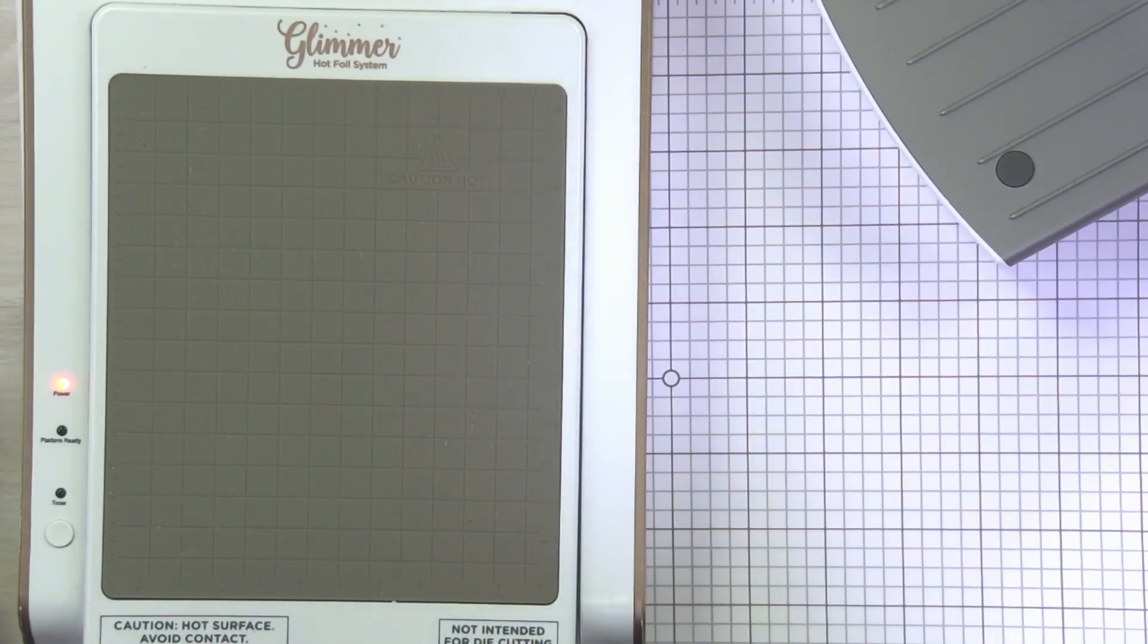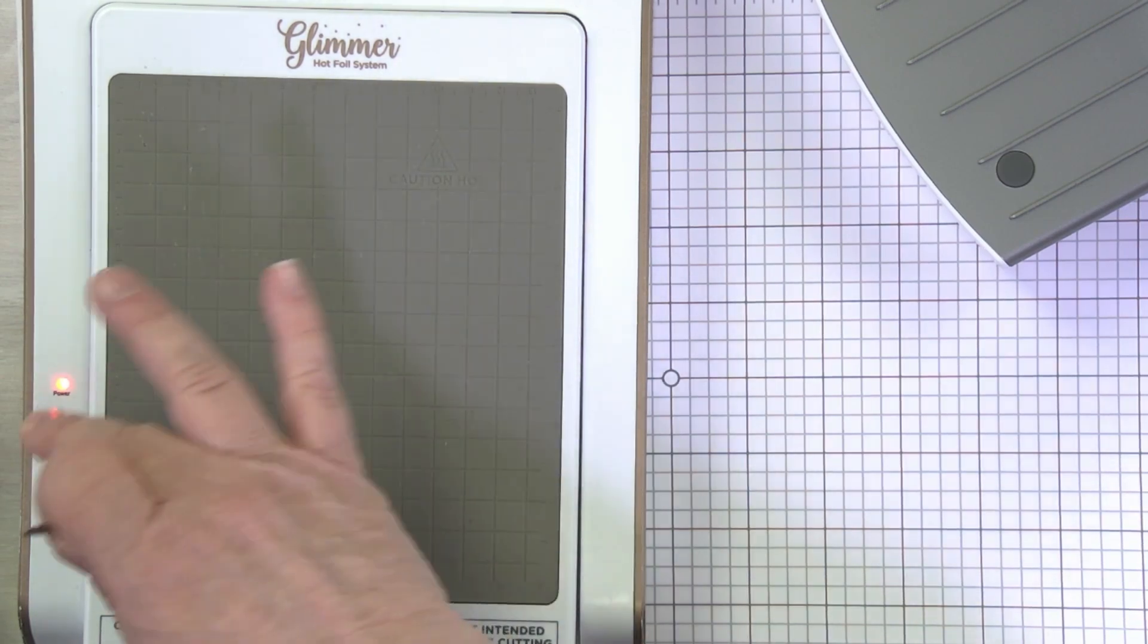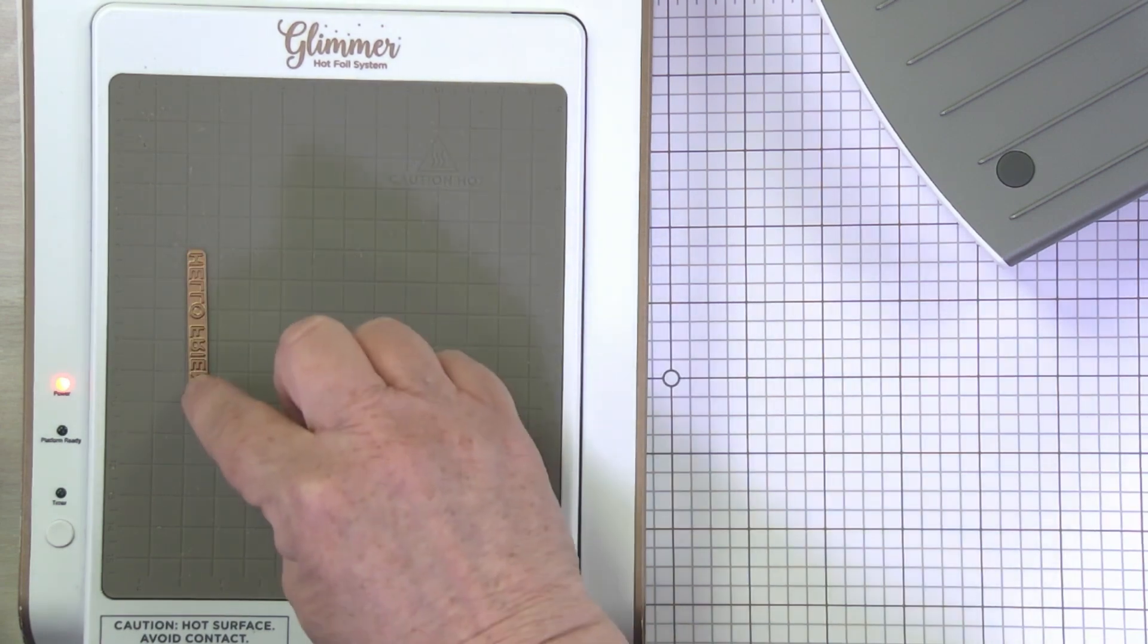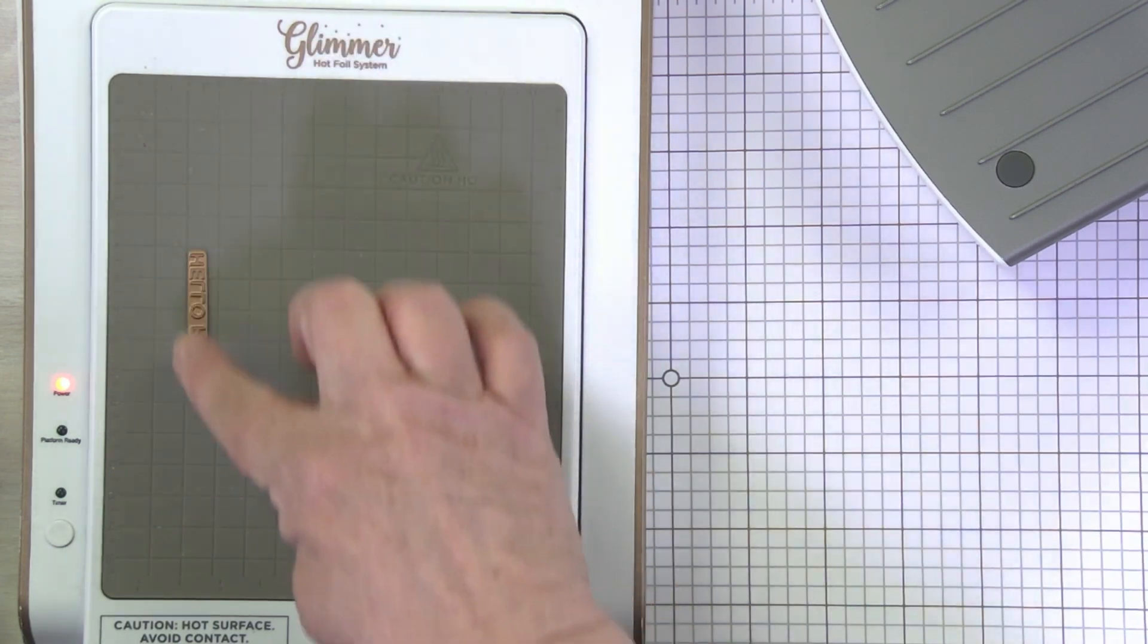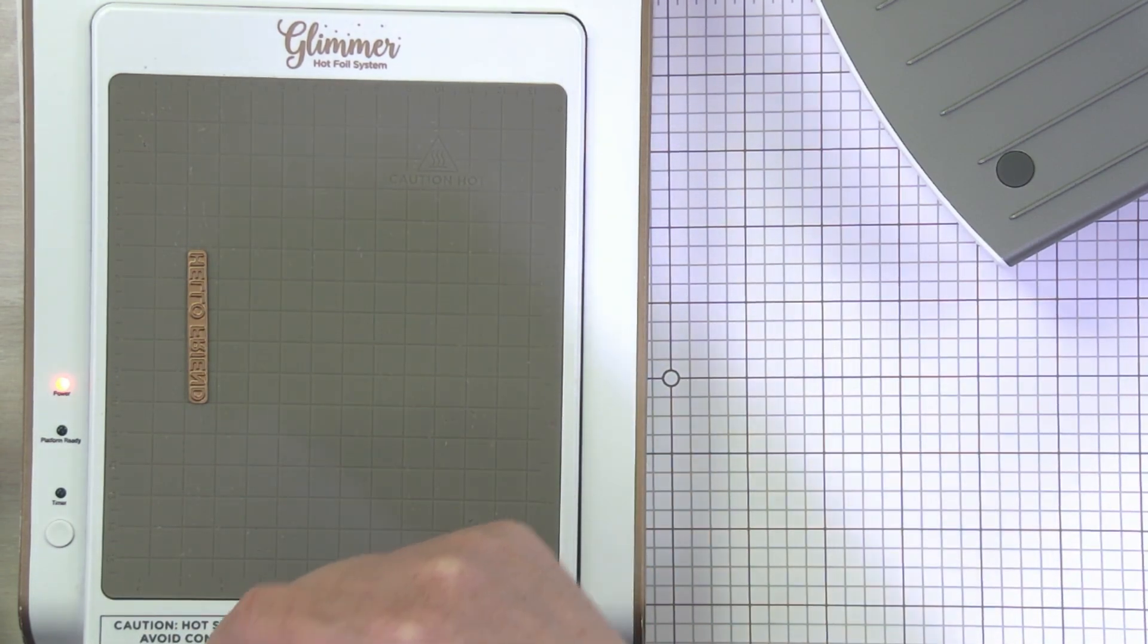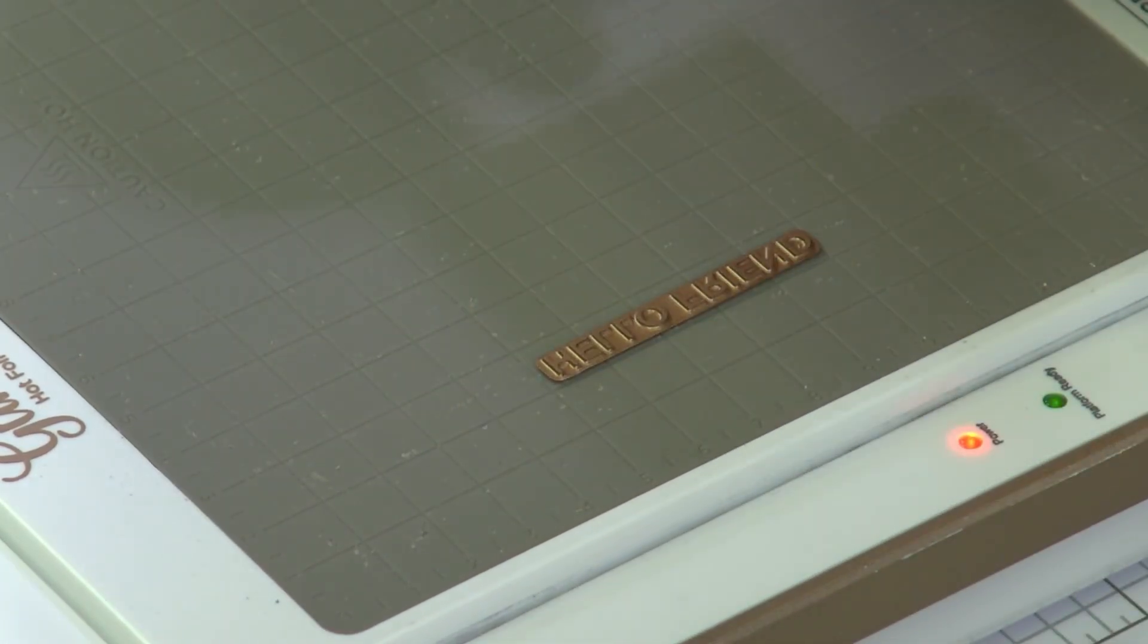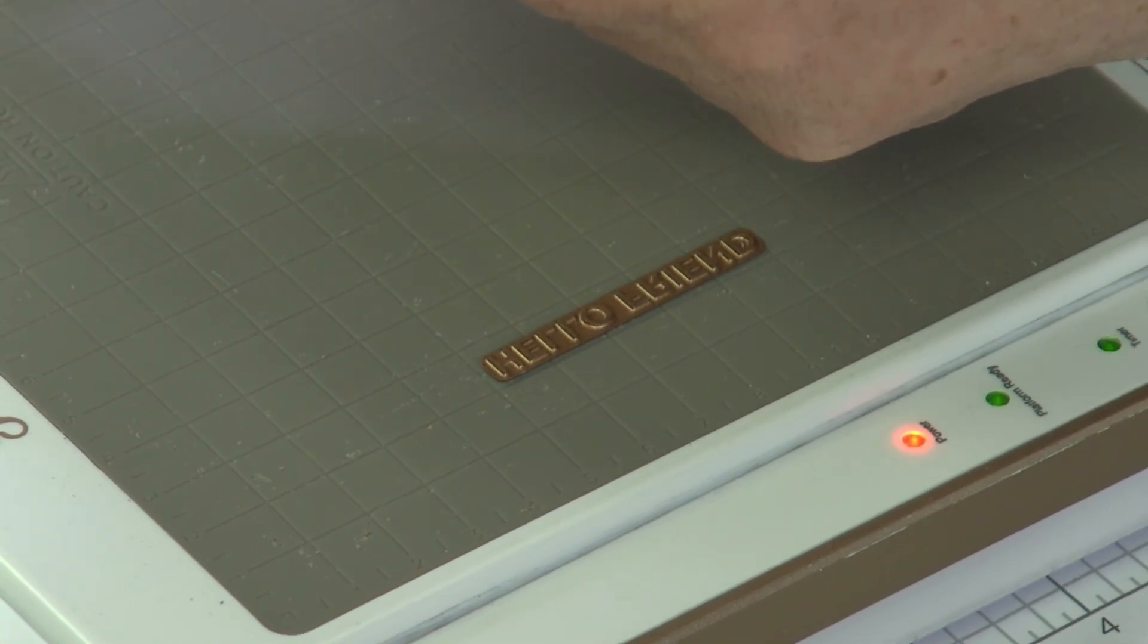Pickup tool, and I'm going to go ahead and add my sentiment. Out of that sentiment set, I chose the little strip called Hello Friend. I know the platform doesn't say it's ready yet, but that's fine. You can still add your plate. Now, one tip for sentiments, especially our long strip sentiments, I like to put them vertical on my platform. I just feel like that gives me good pressure when I switch over to my die cutting machine.